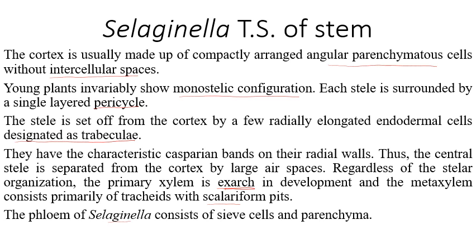The central stele is separated from the cortex by large air spaces. The primary xylem is exarch in development and the metaxylem consists primarily of tracheids with scalariform pits. The phloem consists of sieve cells and parenchyma. The specialized cells separating cortex and stele are the trabeculae, visible in the cross-section between the epidermis and the endodermis.